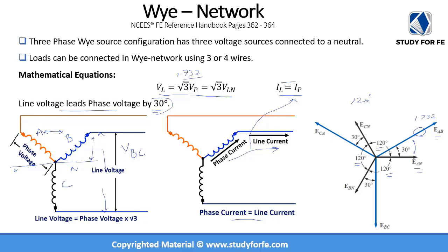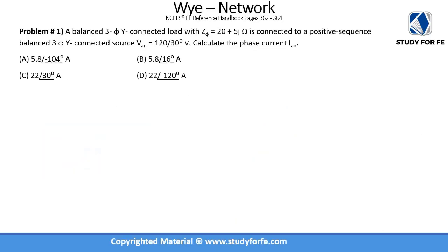Here is a practice problem: we have a balanced three-phase Y-connected load with a phase impedance of a given value, connected to a positive-sequence balanced three-phase Y-connected source with a line-to-neutral voltage of 120 volts at a 30-degree phase angle. We are being asked to calculate the phase current. Focus on the impedance provided, the fact that the load is Y-connected and the source is Y-connected, and that you are given the phase voltage and asked to calculate the phase current.